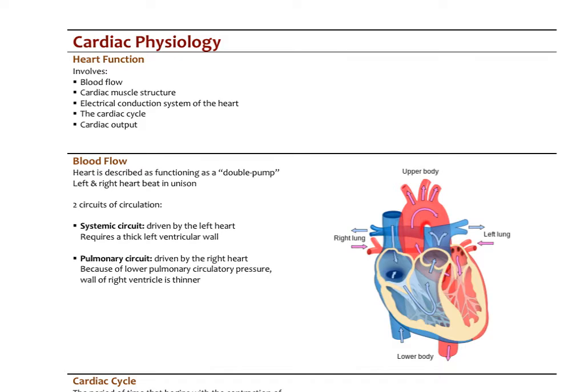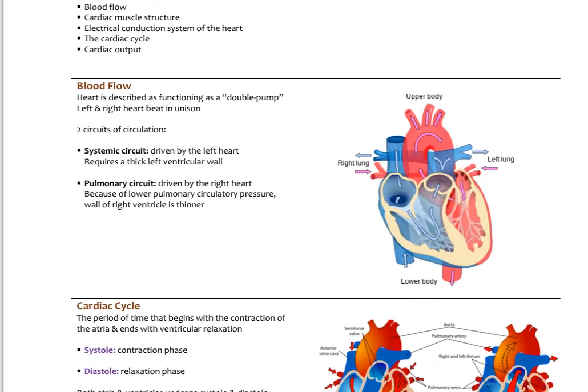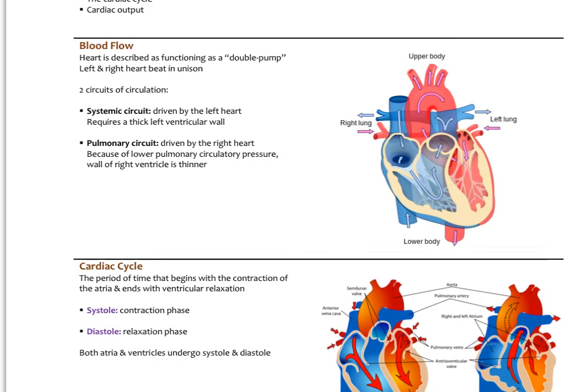We can think of the blood flow as the heart being a double pump. The left and the right heart beat in unison, so both ventricles contract at the same time. The contraction is known as systole, and the relaxation of the muscles is known as diastole. The atria also contract, but we are usually more interested in the ventricle.